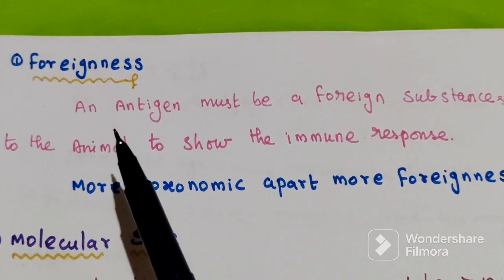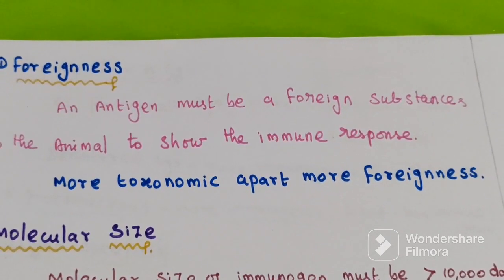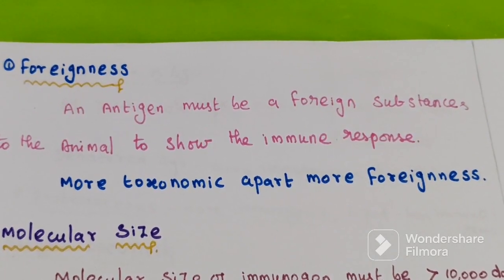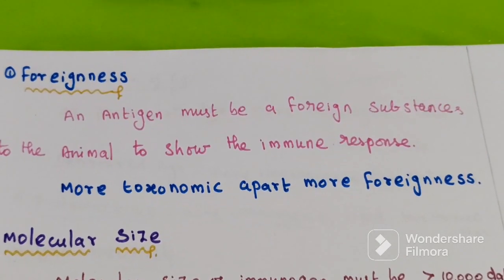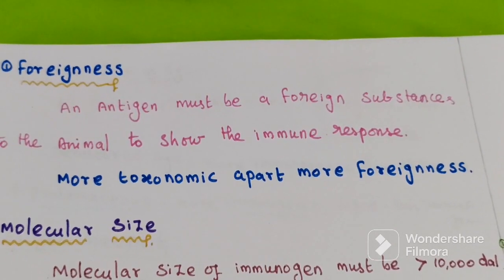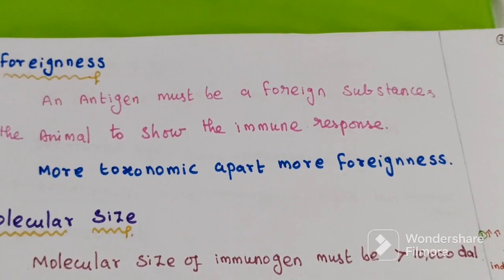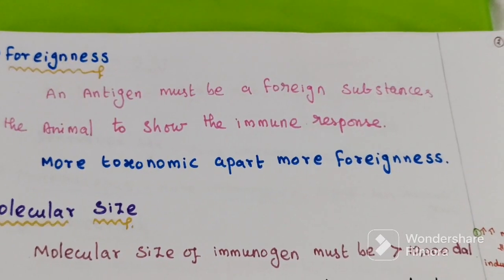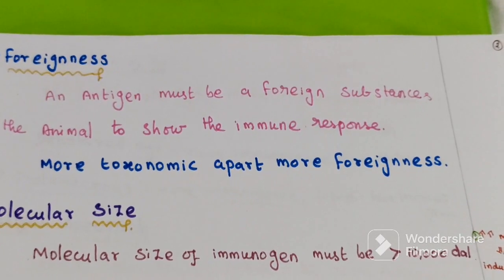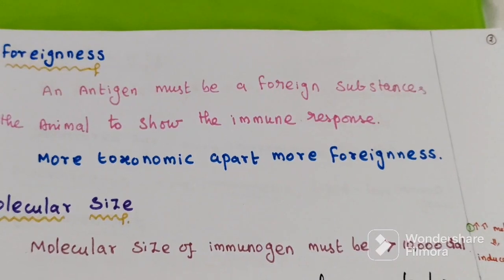The first factor is foreignness. An antigen must be a foreign substance to the animal to show an immune response. Those antigens that are more taxonomically apart are more foreign. For example, organisms belonging to mammals are foreign to organisms belonging to birds.